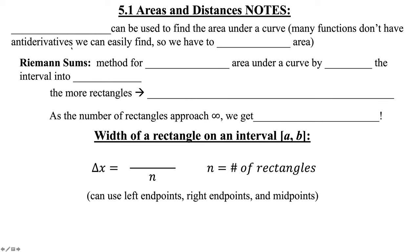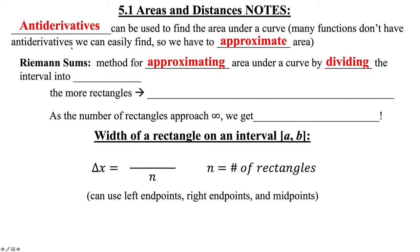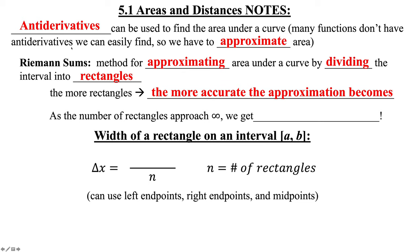Antiderivatives can be used to find the area under a curve. Many functions don't have antiderivatives we can easily find, so we have to approximate the area. Riemann sums are a method for approximating area under a curve by dividing the interval into rectangles. The more rectangles, the more accurate the approximation becomes. As the number of rectangles approaches infinity, we get an exact area.